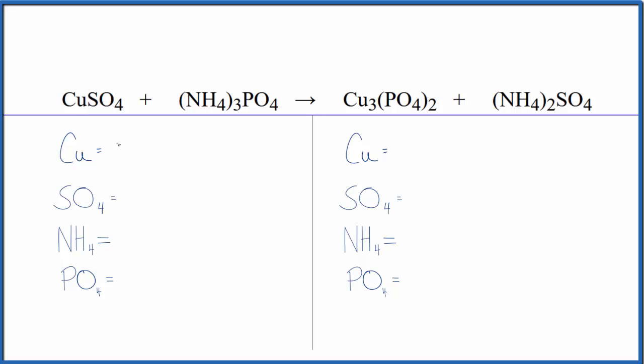We have one copper, and then this sulfate, this SO4, it's a polyatomic ion. We have it here and over here, so we're going to count that as just one thing. We have one sulfate ion here. The ammonium ion, again we have it here and here, so we have three ammonium ions here.